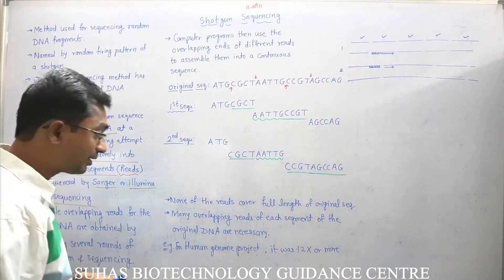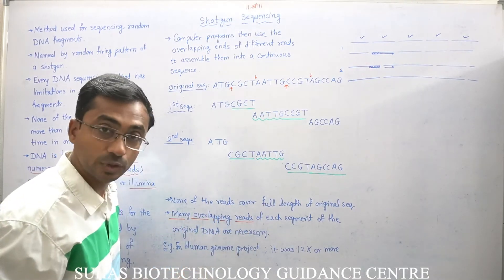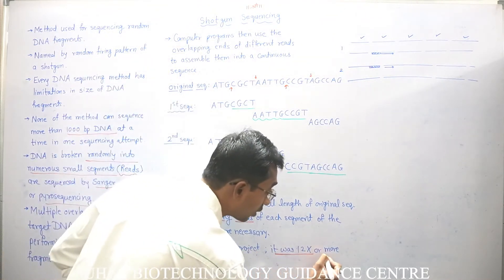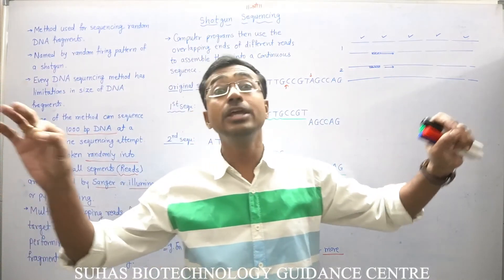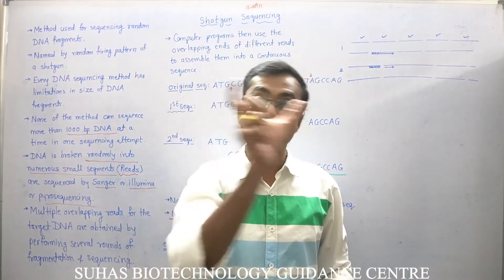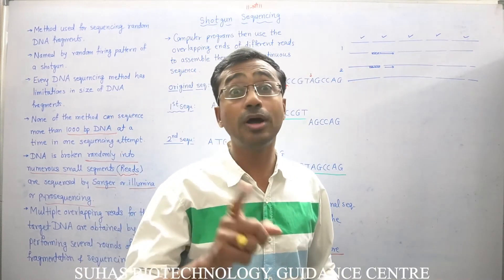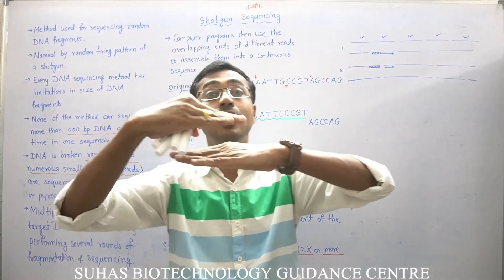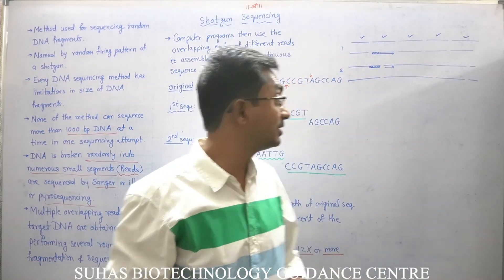For example, in the Human Genome Project it was 12x or more coverage — meaning the complete human DNA was broken 12 times using 12 different methods, and each fragment was sequenced. This means each base pair in the human genome was sequenced at least 12 times. These overlaps were later used to find the complete genomic sequence.